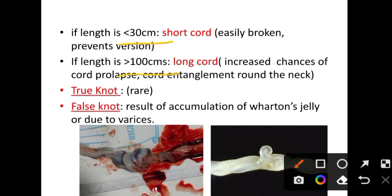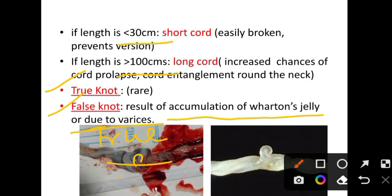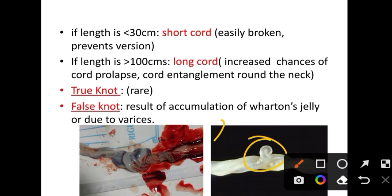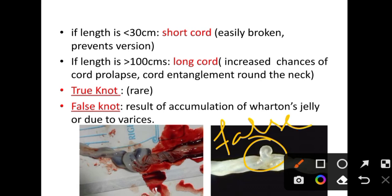If the cord length is more than 100 cm it is called a long cord, which increases chances of cord prolapse and cord entanglement around the neck. We also observe true knots and false knots. True knots are very rare. A false knot is the result of accumulation of Wharton's jelly or due to varices — it appears knot-like but is not a true knot.